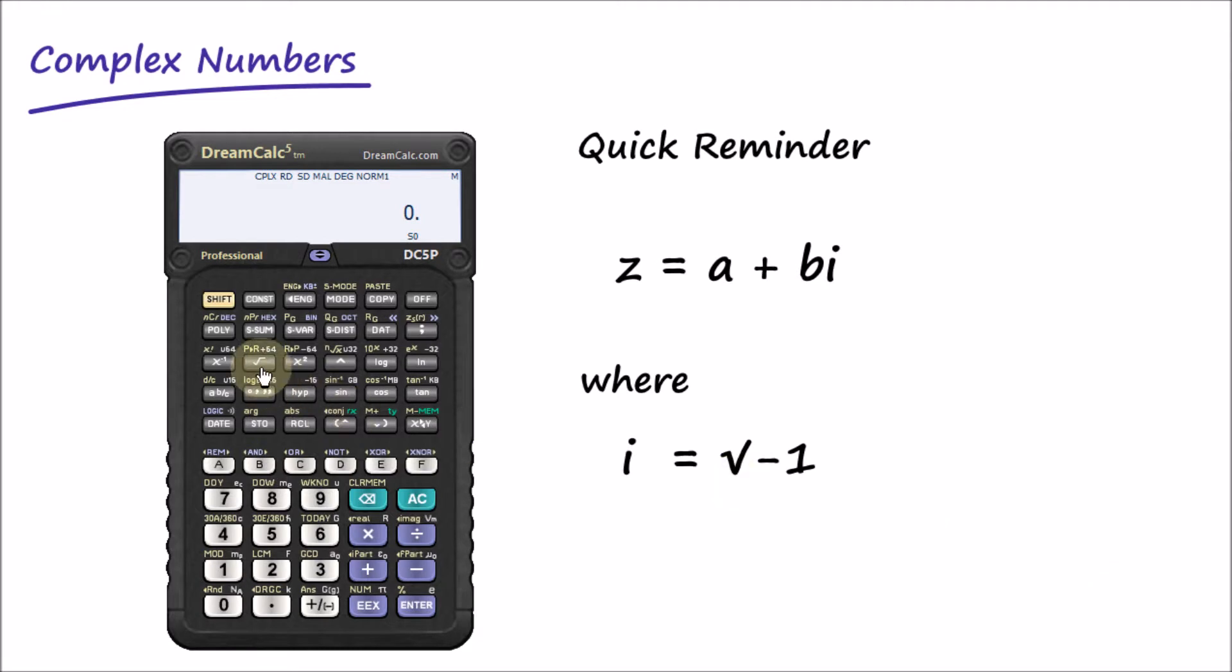The letter i represents the imaginary unit where i is equal to the square root of minus one. Let's demonstrate: square root minus one equals one i.